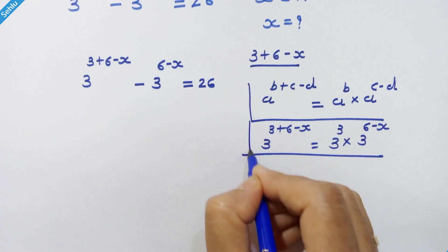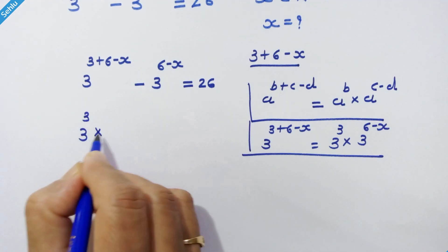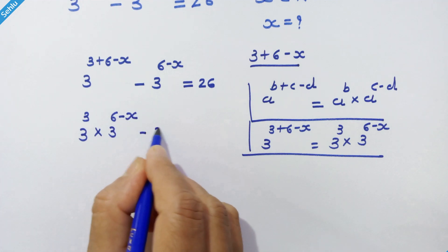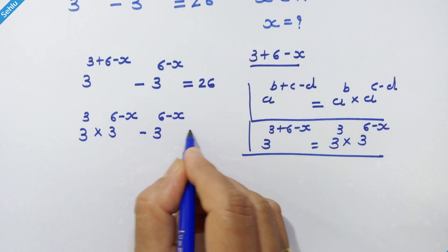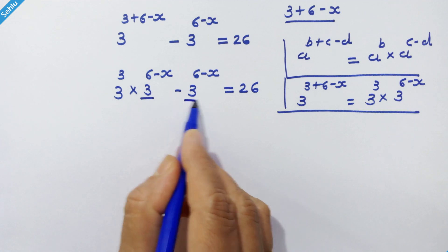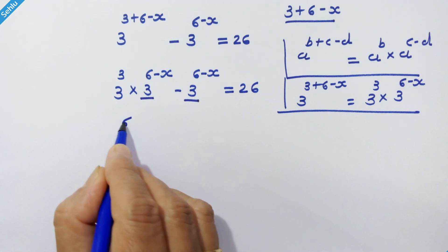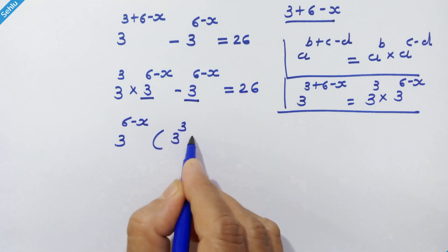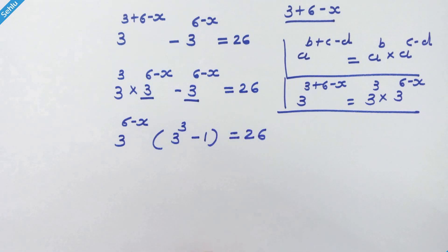So let's put it in. We have 3 raised to 3, into 3 raised to (6 minus x), minus 3 raised to (6 minus x), is equal to 26. We can take 3 raised to (6 minus x) as a common factor. So our next step will be: 3 raised to (6 minus x), into (3 cubed minus 1), is equal to 26.